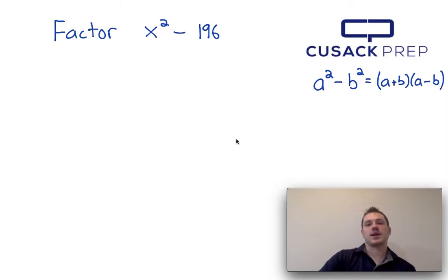Because I have two perfect squares and I'm subtracting them, I can factor this using the difference of squares formula, which I presented on the right-hand side.